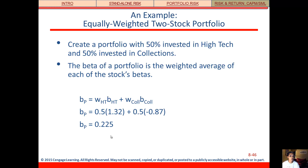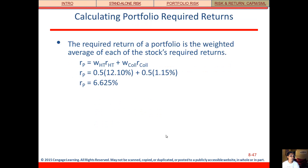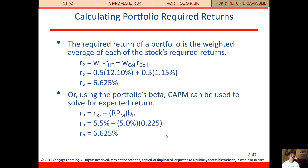For our equally weighted portfolio, the portfolio beta is the weighted average of the betas of the stocks in the portfolio. With HITECH (beta 1.32) and Collections (beta negative 0.87) equally weighted, that gives a portfolio beta of 0.225. The portfolio required return is the weighted average of returns — 6.625% — and we can also calculate it using CAPM and get the same result.